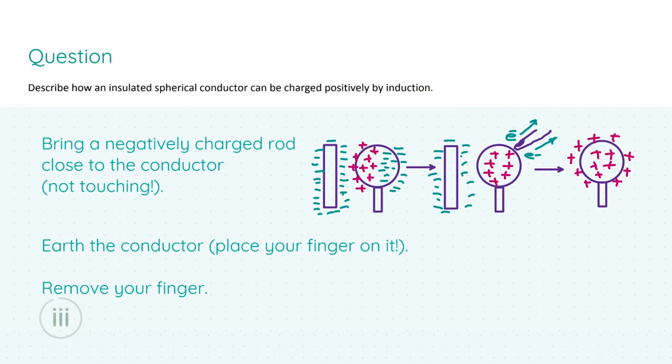Moving on to our next part of the question, we're asked to describe how an insulated spherical conductor can be charged positively by induction. I've included a diagram which I include to the right here as well as the verbal steps. You don't necessarily have to put in a diagram because it doesn't say specifically draw with the aid of a labeled diagram, but it does help. For your first three marks, you have to say that you bring a negatively charged rod close to the conductor but it must not be touching, because as you can see here in the first diagram we have a separation of charges, and the positive charges in the insulated spherical conductor are being attracted to the negatively charged rod.